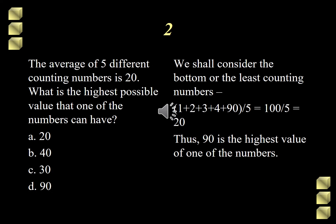Moving on to question number 2. It says the average of 5 different counting numbers is 20. What is the highest possible value that one of the numbers can have? The choices are A, 20, B, 40, C, 30, and D, 90.